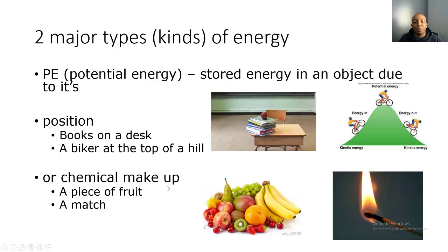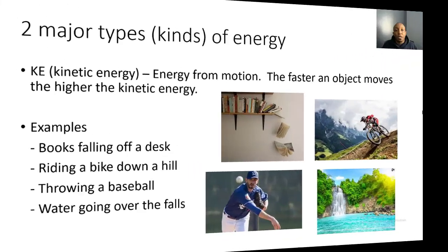Potential energy can also be based upon an object's chemical makeup. For example, the food that we eat has a lot of potential energy because it has chemical energy. When we eat our food, we break those chemical bonds and release the energy in that food to give us energy so that we can do work.